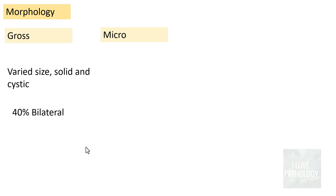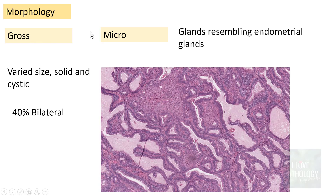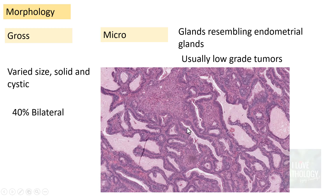Morphologically, grossly these tumors can be of variable size and can be solid and cystic. 40 percent of the time they are bilateral. Microscopically, these tumors contain glands resembling endometrial glands. Endometrioid carcinomas of the ovary are usually low-grade tumors. In the micrograph you can see glandular elements which resemble endometrial glands — usually irregular glands but low grade.